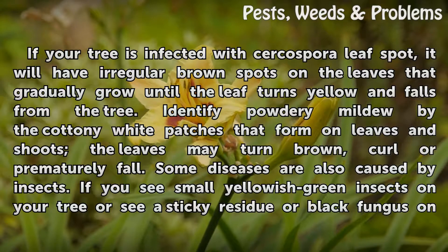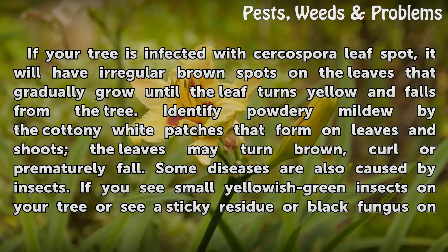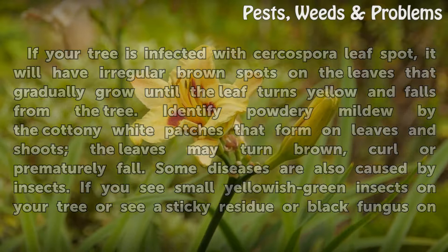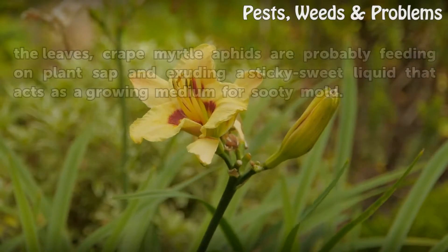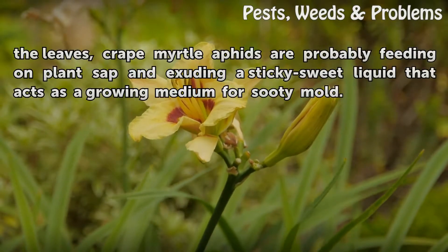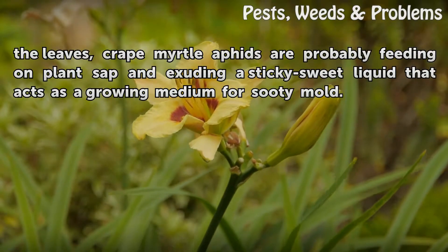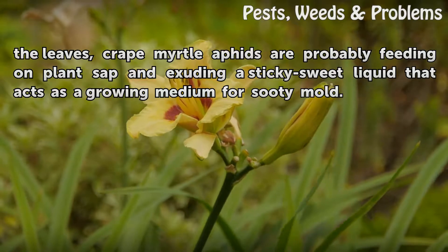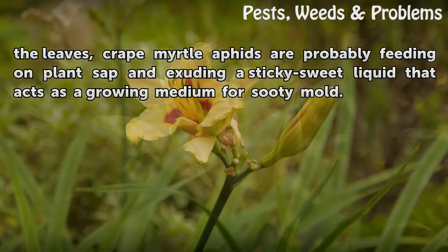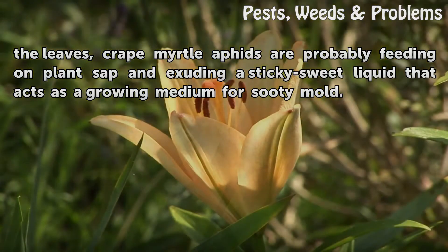Some diseases are also caused by insects. If you see small yellowish-green insects on your tree, or see a sticky residue or black fungus on the leaves, crepe myrtle aphids are probably feeding on plant sap and exuding a sticky sweet liquid that acts as a growing medium for sooty mold.